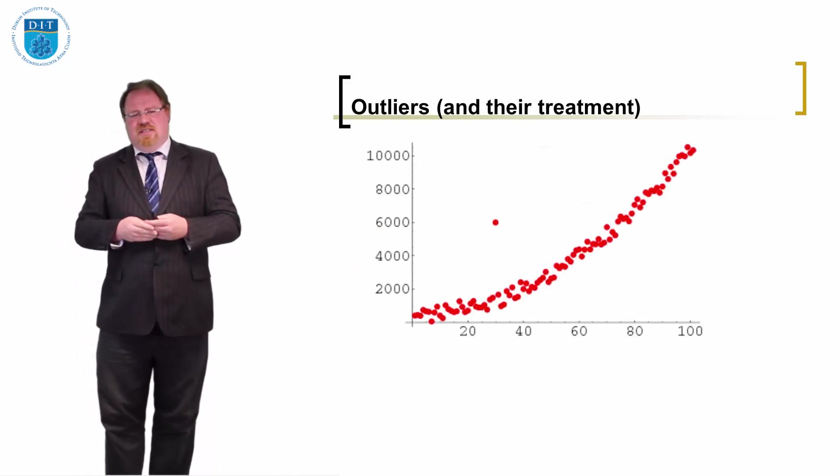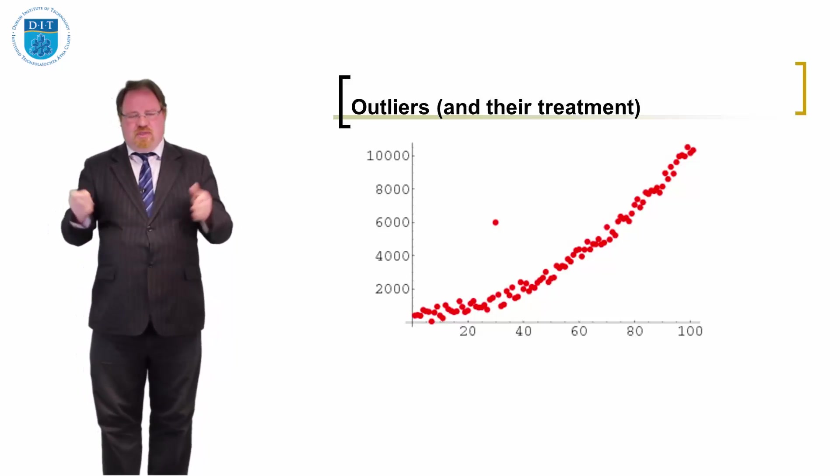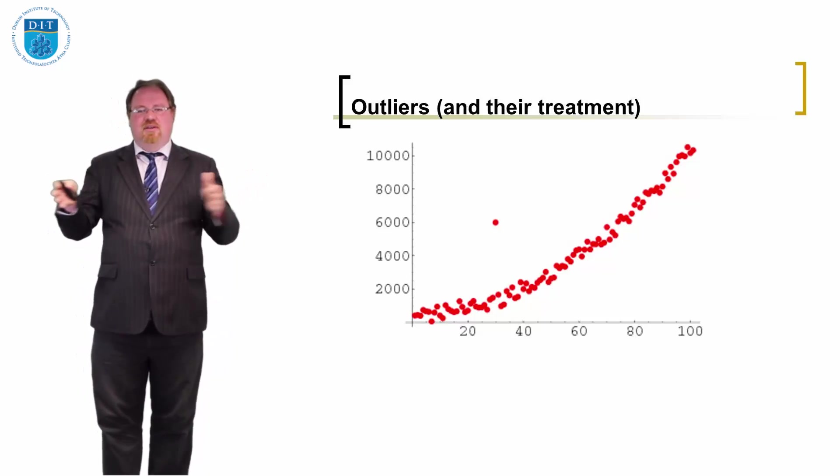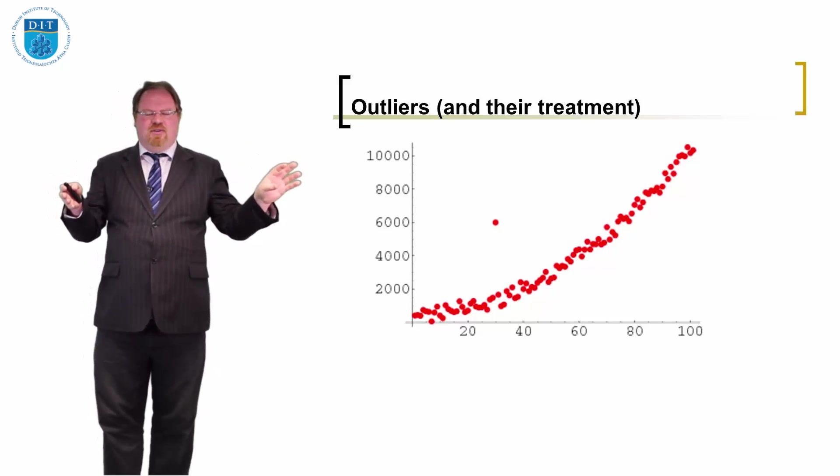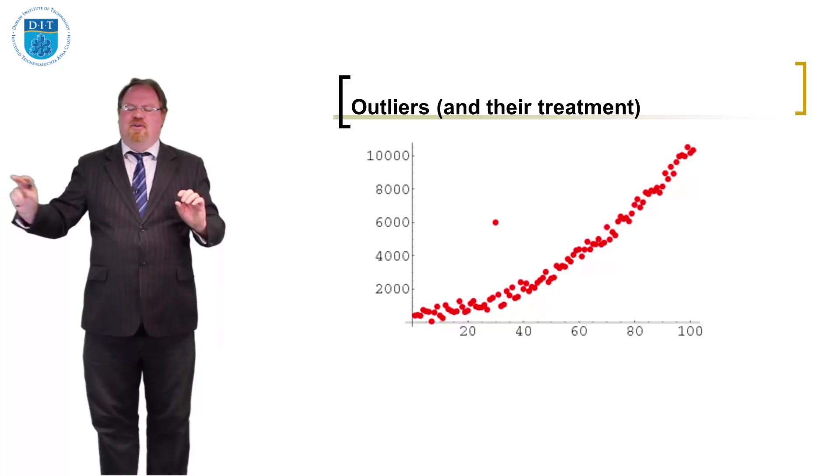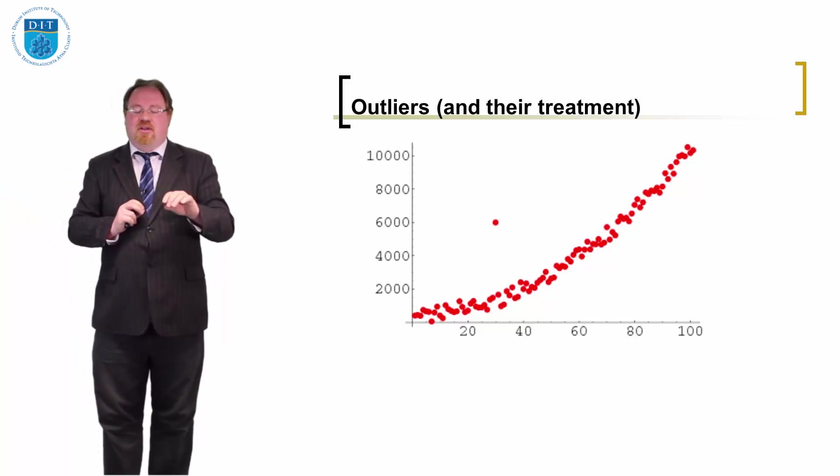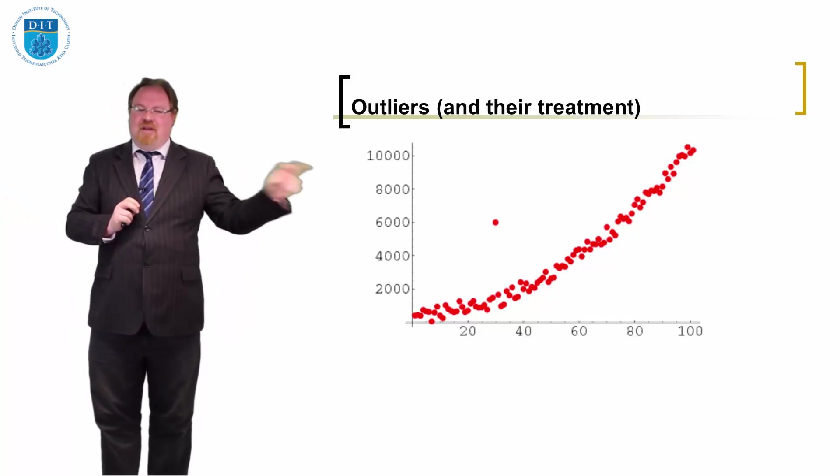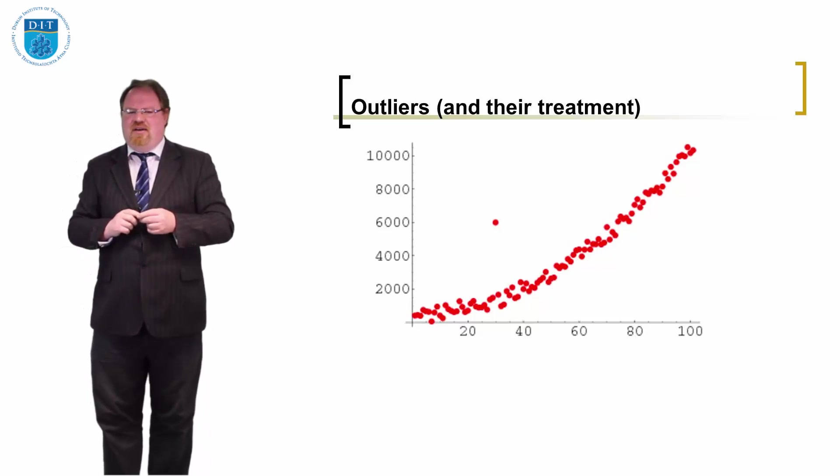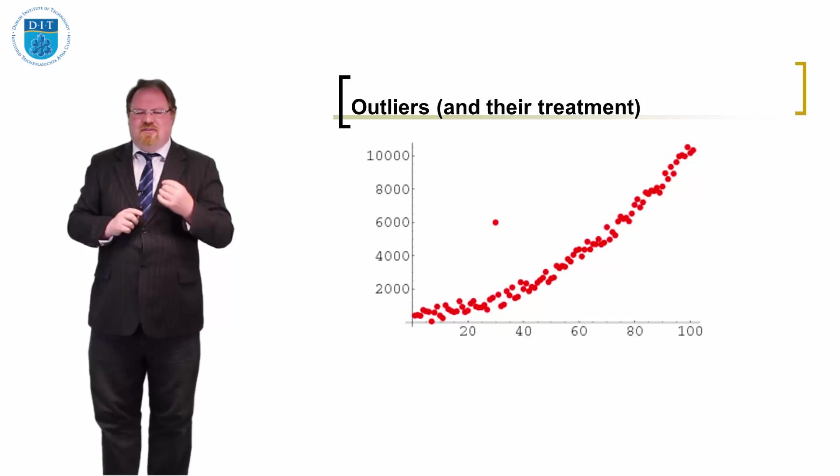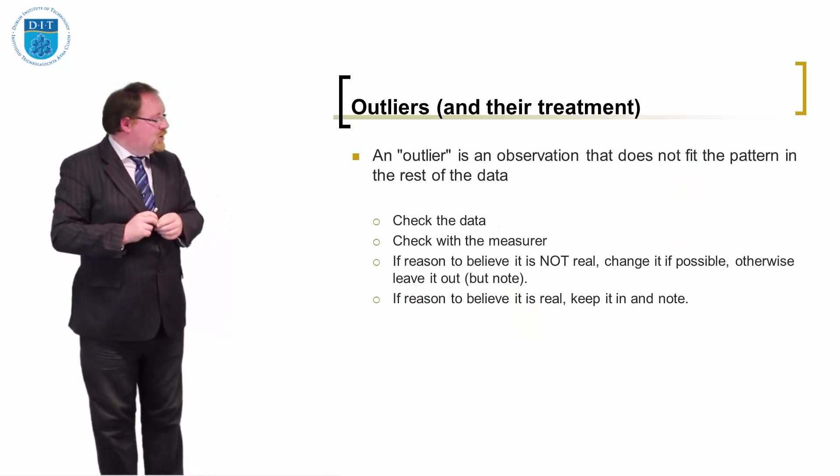Another term that's interesting to talk about is an outlier. Sometimes when we collect a bunch of data, we have a series of figures and then there's one value that's way, way bigger or way, way smaller than all the other numbers. We call that an outlier. It outlies the rest of the values. And I want to think about how we treat outliers. If there's one number that doesn't fit the pattern, what should we do?